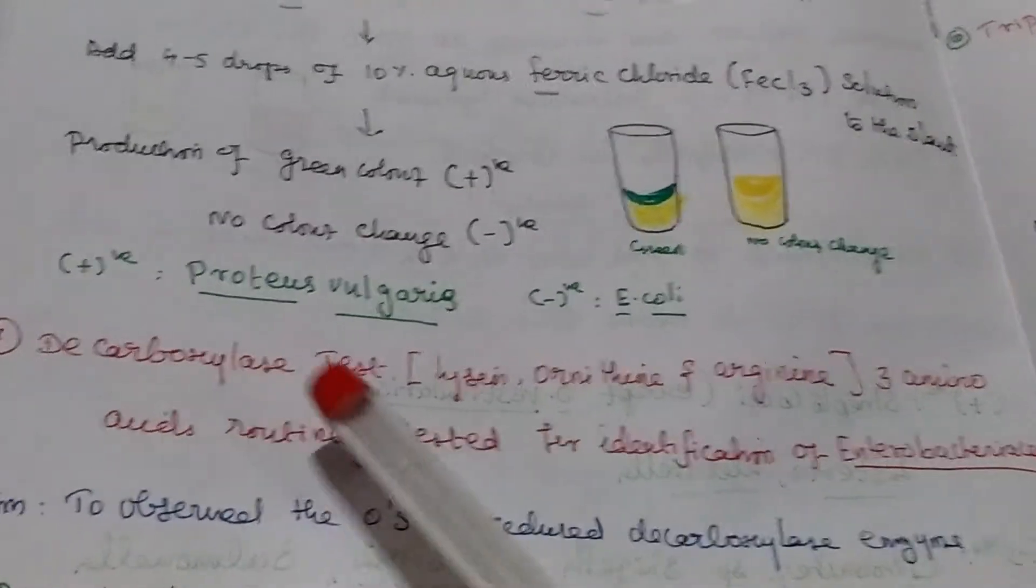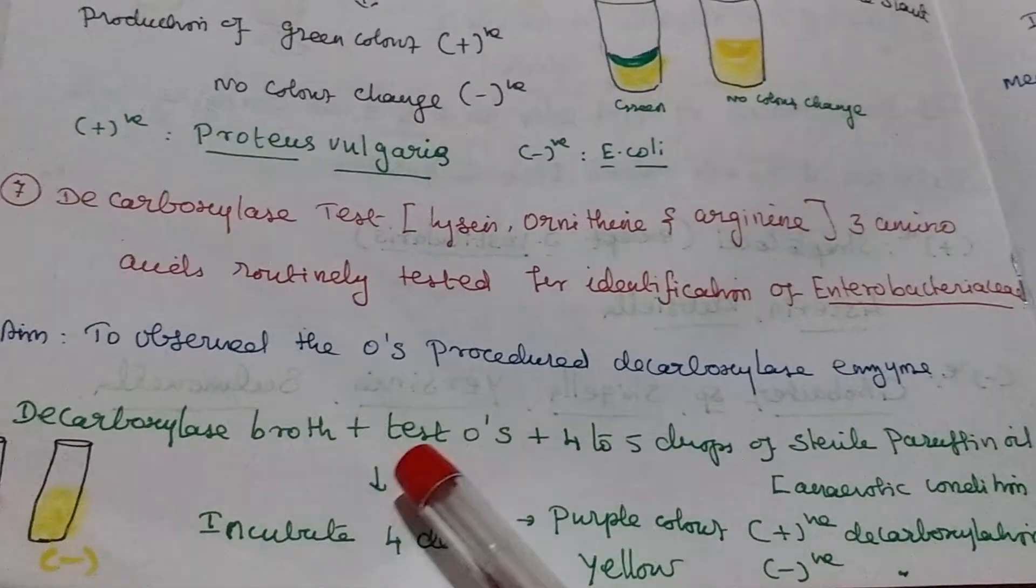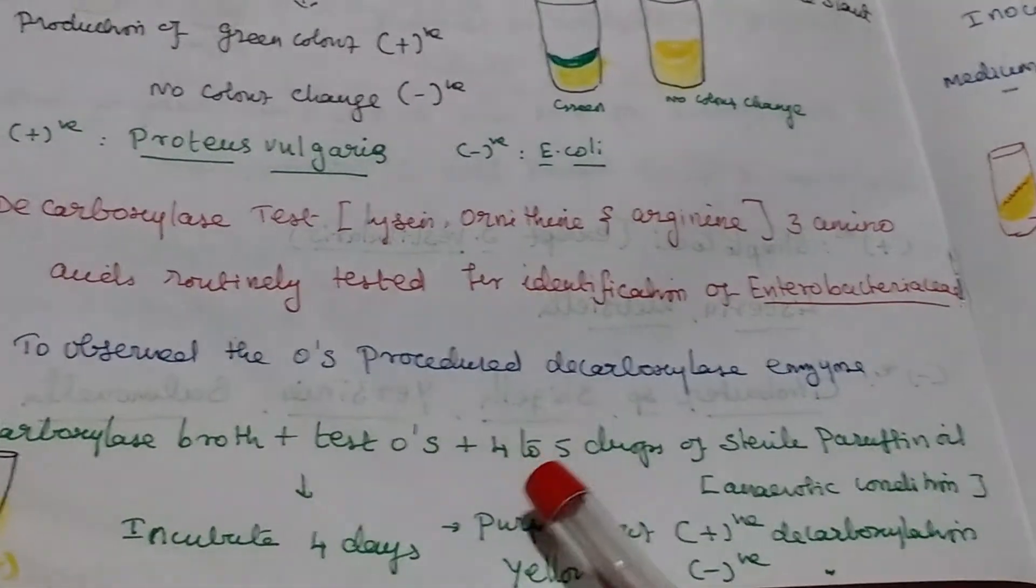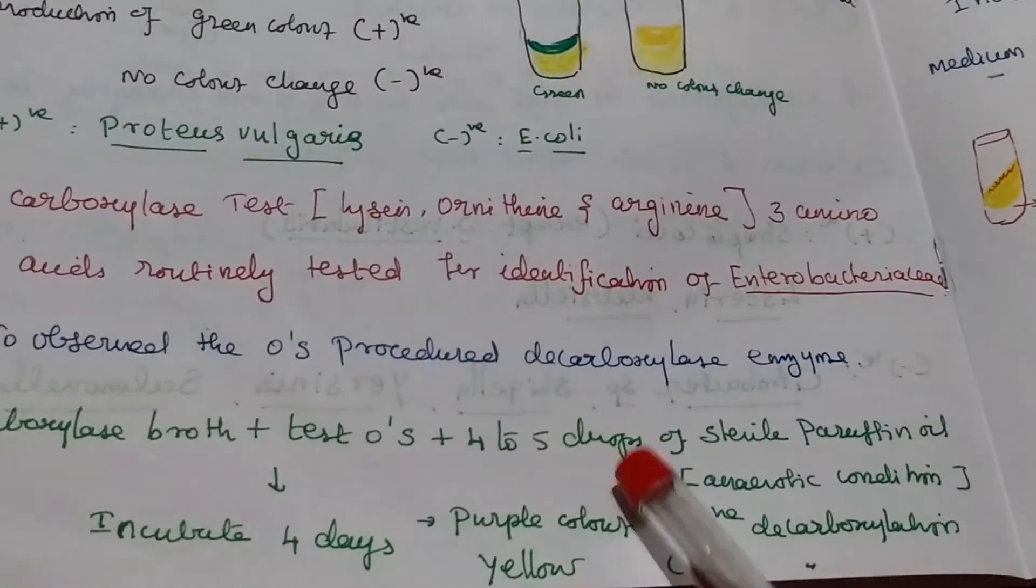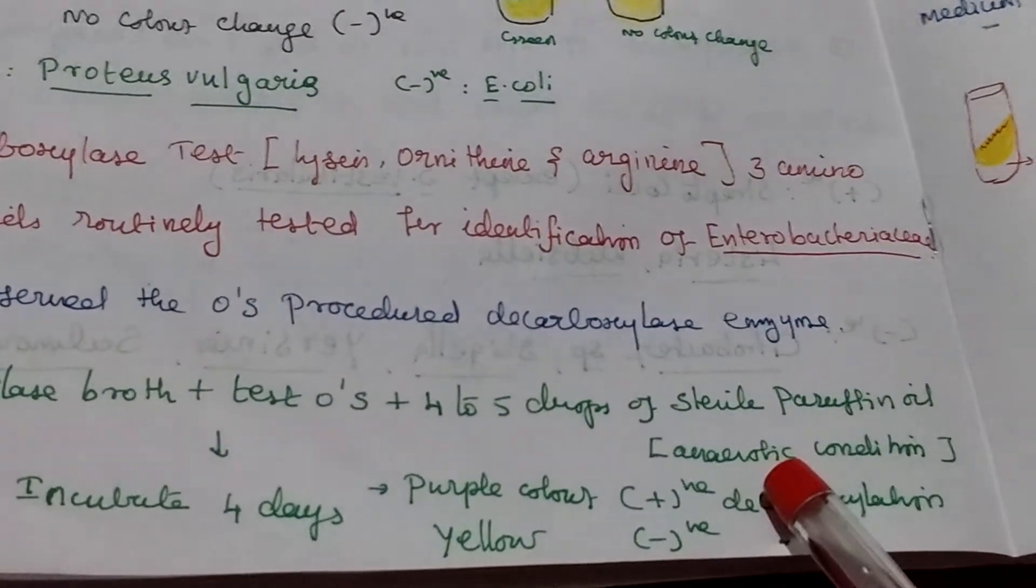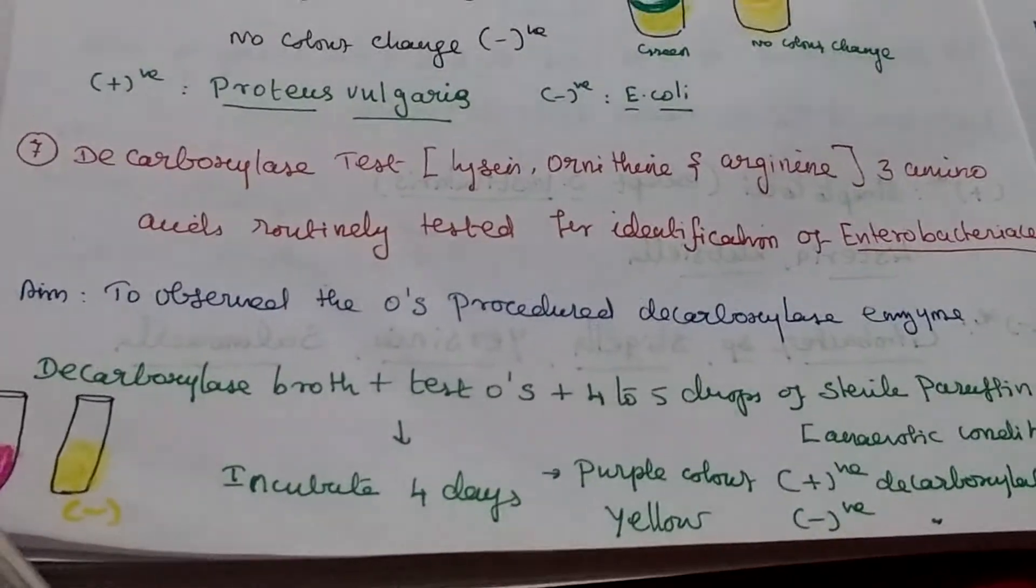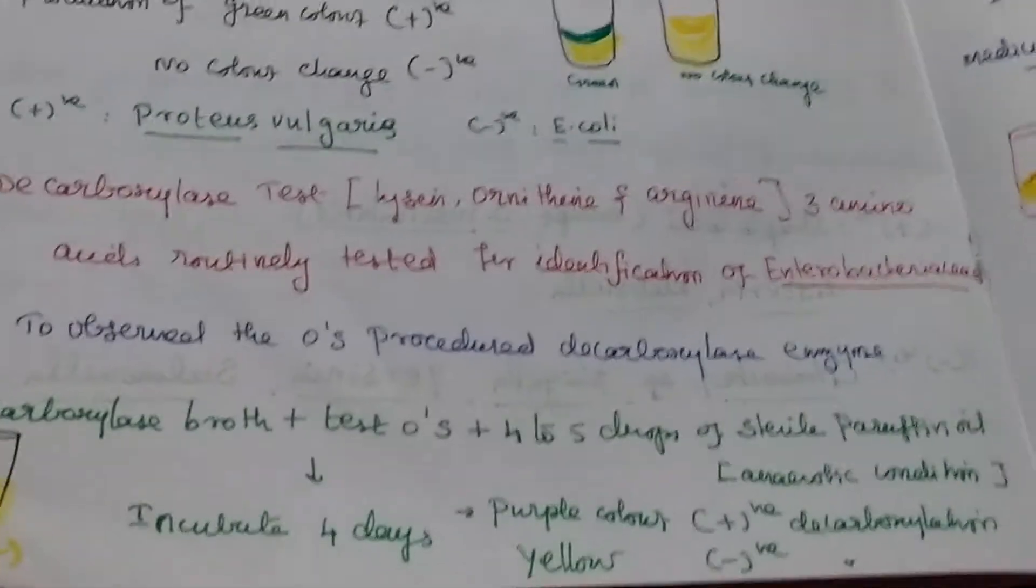Amino acid decarboxylase test. Here we are taking decarboxylase broth plus test organism. Then we are adding 4 to 5 drops of sterile paraffin oil because we will maintain anaerobic condition. Incubated 4 days. Pink color production positive, otherwise negative.